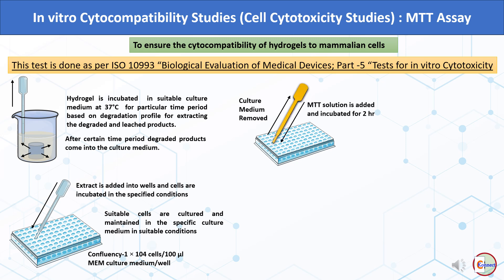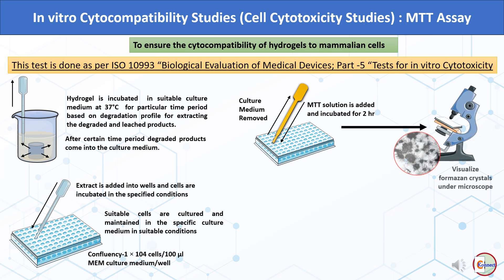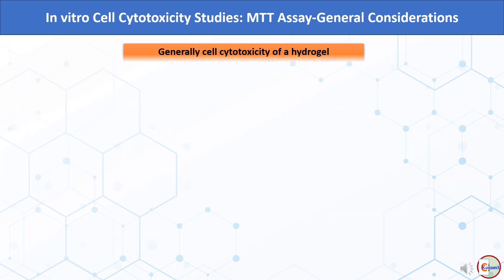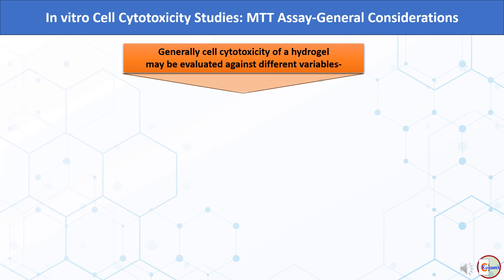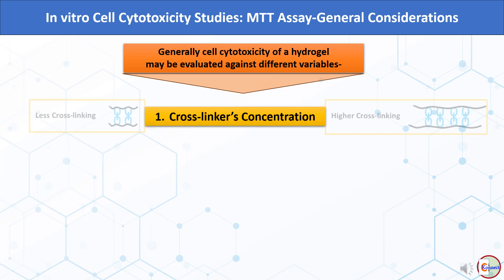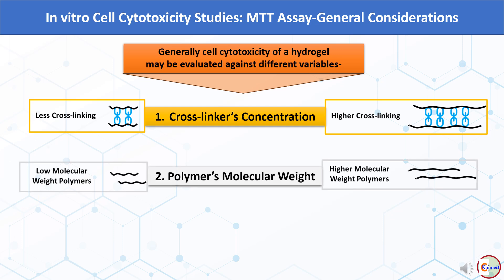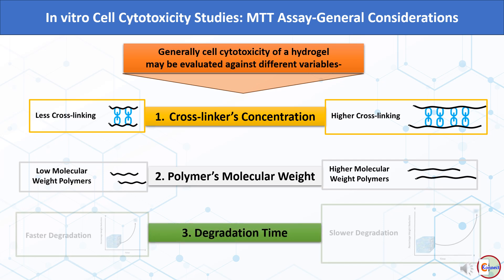The plate is observed under a microscope to visualize formazan crystals. These formazan crystals are dissolved in 100 μL of isopropanol and absorbance is recorded at 570 nm in a microplate reader. Cell cytotoxicity of a hydrogel may be evaluated against different variables: crosslinker concentration (less vs. higher crosslinking), polymer molecular weight (low vs. high), and degradation time (faster vs. slower degradation).